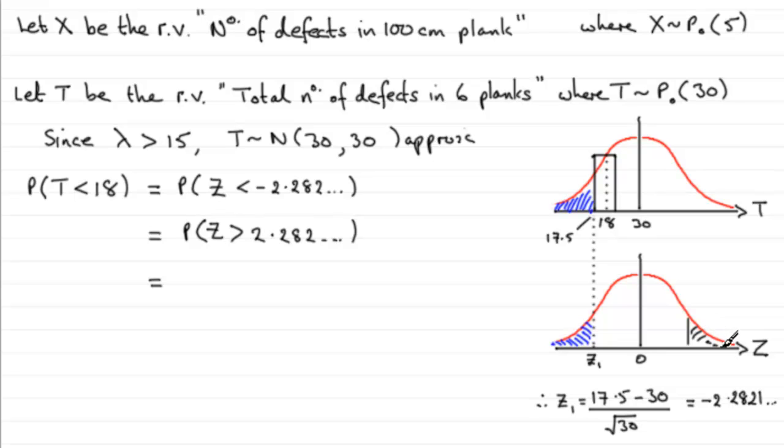Working out that area is the same as one - the whole area - minus the probability that Z is less than 2.282 and so on. This now puts us into the tables. In the usual way, if you look up your value that you get for this, you should find that you get 0.9887. Take that away from one and you've got your answer: 0.0113.